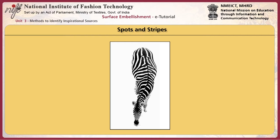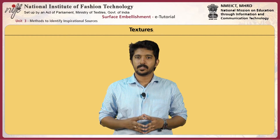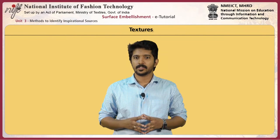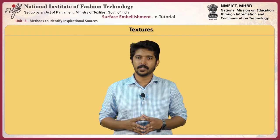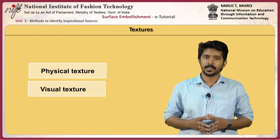Texture is the perceived surface quality of a work of art. It is an element of two-dimensional and three-dimensional design and is distinguished by perceived visual and physical properties. Use of texture along with other elements of design can convey a variety of messages and emotions. There are two varieties of texture: physical texture and visual texture.